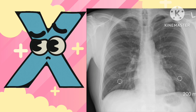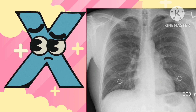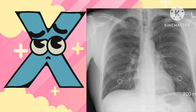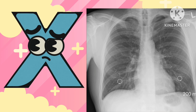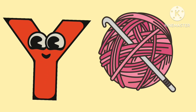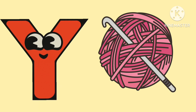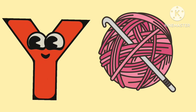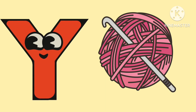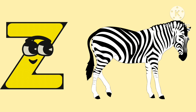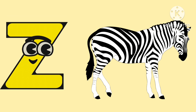X is for x-ray. This is a chest x-ray of a human. Y is for yarn. Z is for zebra. Z, z, zebra.